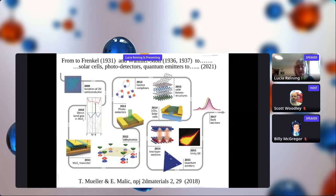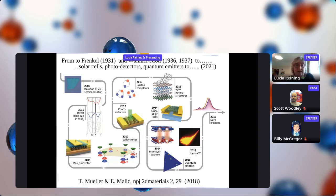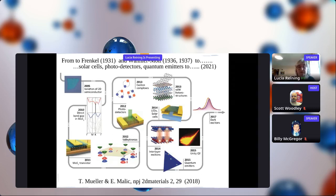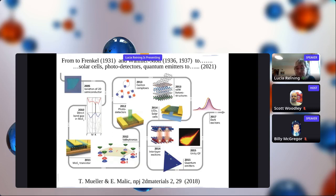Excitons are a very old topic, but they have become fashionable again. For example, in the context of 2D materials - because in 2D materials interactions are typically very strong - excitons are very strong and play a dominant role in optical properties. They are important for photodetectors, where you absorb photons. They can couple to other particles like additional charges to make trions and higher-order complexes. They are important in heterostructures, where you can make interlayer excitons with the hole on one layer and electron on another. The research continues through dark excitons, about which I will talk later.